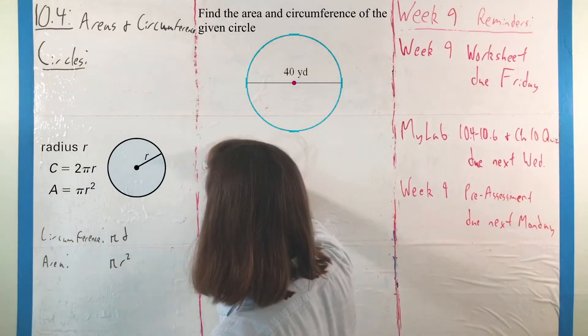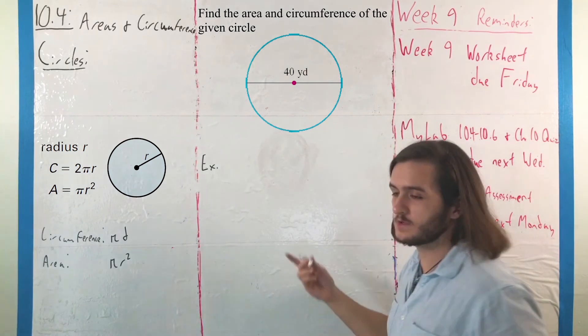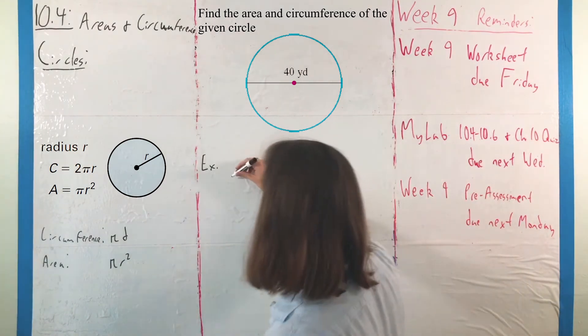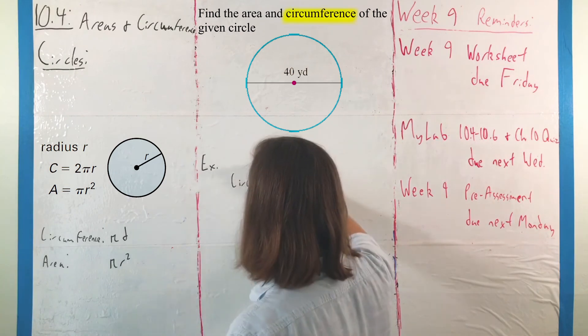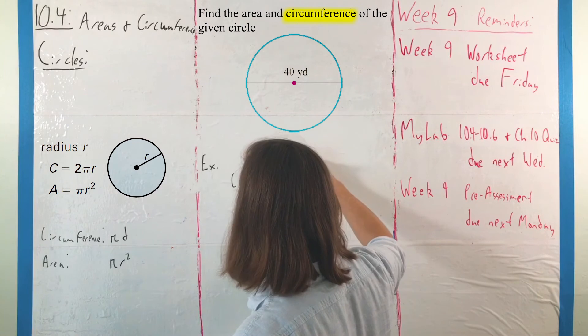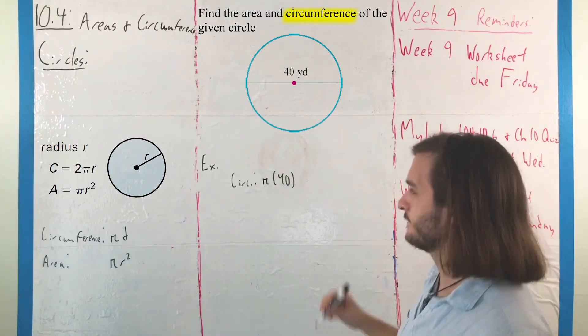So, for this, what we can do is just take down those measures in terms of those formulas. For the circumference, what we would do is just take pi times that diameter measurement, so 40 yards.